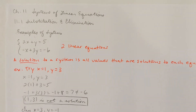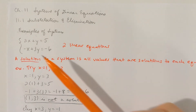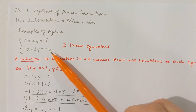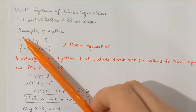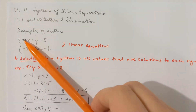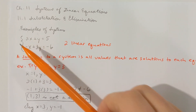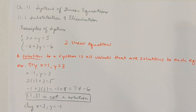I've got some examples of some systems. In this problem here, I've got two equations with two unknowns. It's typical to enclose the equations with a bracket, and the unknowns would be x and y.